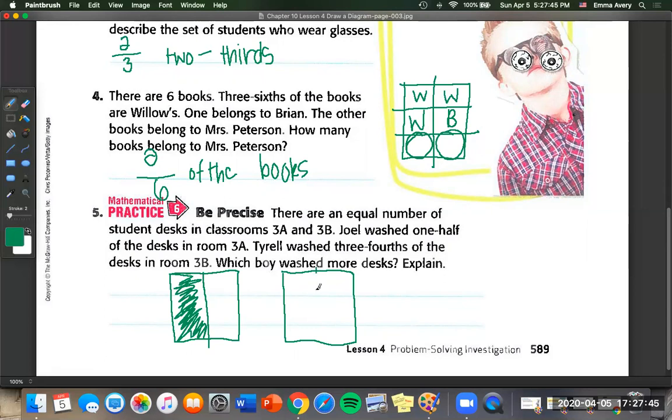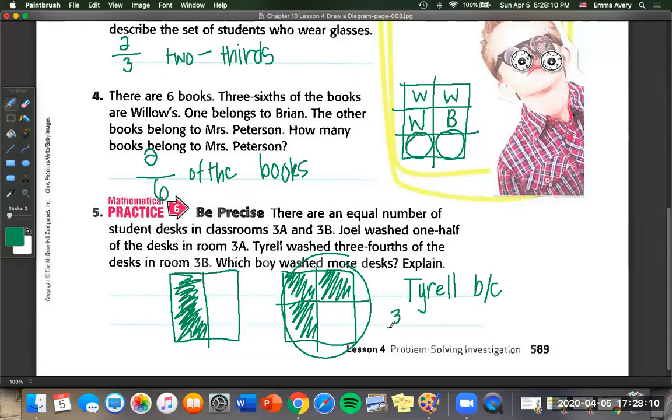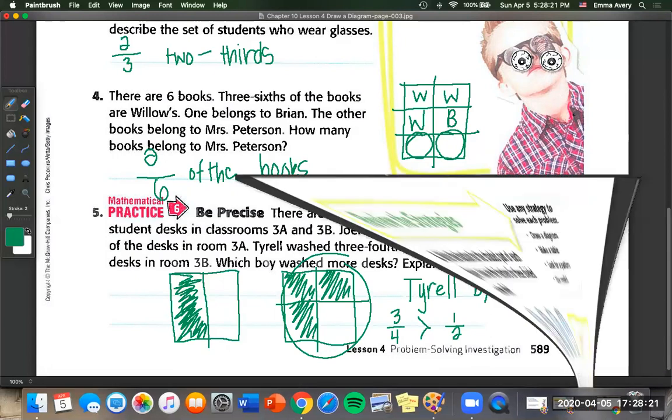And Tyrell washed three fourths. So we just split this into fourths and color in three of these. So which one of these has more space covered? It's going to be Tyrell. So we can say Tyrell because three fourths is greater than one half. And we'll get into this more in another lesson with comparing fractions.